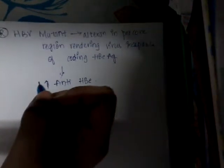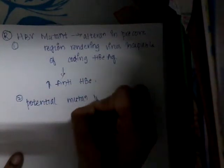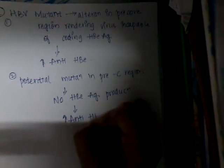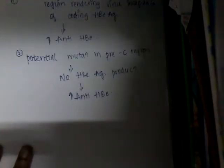A second type involves a mutation in the pre-C region. Since the pre-C region is necessary for HBeAg production, there is no HBeAg production, resulting in increased anti-HBe.